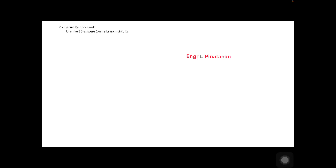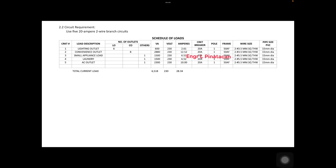The circuit requirements call for five 20-ampere two-wire branch circuits: circuit 1 for lighting outlets, circuit 2 for convenience outlets, circuit 3 for small appliance loads such as a refrigerator and microwave oven, circuit 4 for the laundry machine, and circuit 5 for the air conditioning outlet. The total apparent power on the schedule of load is 6,518 volt-amperes.